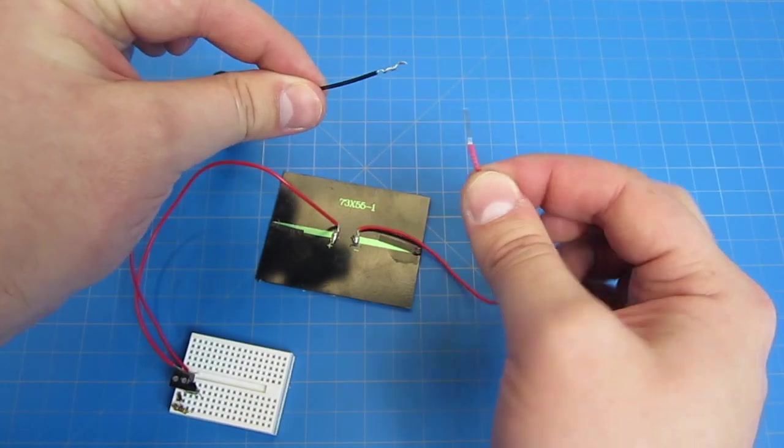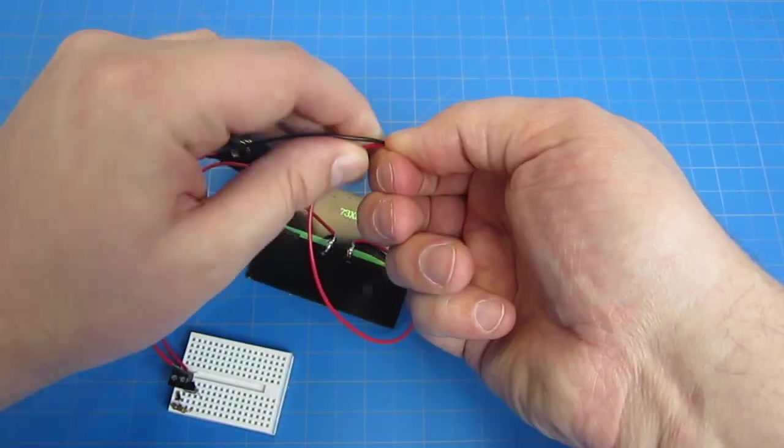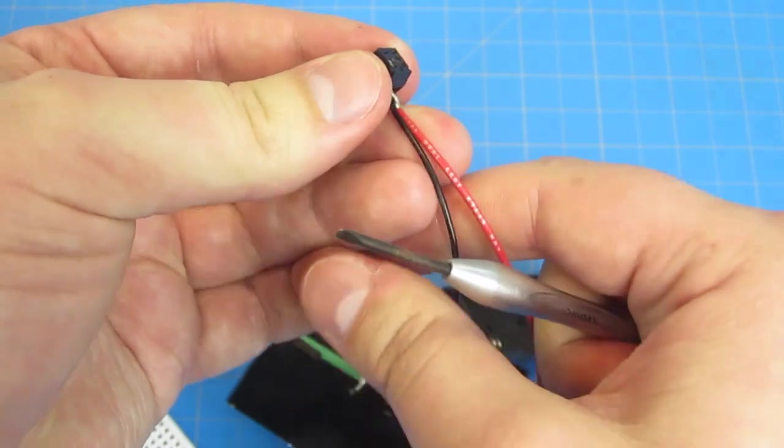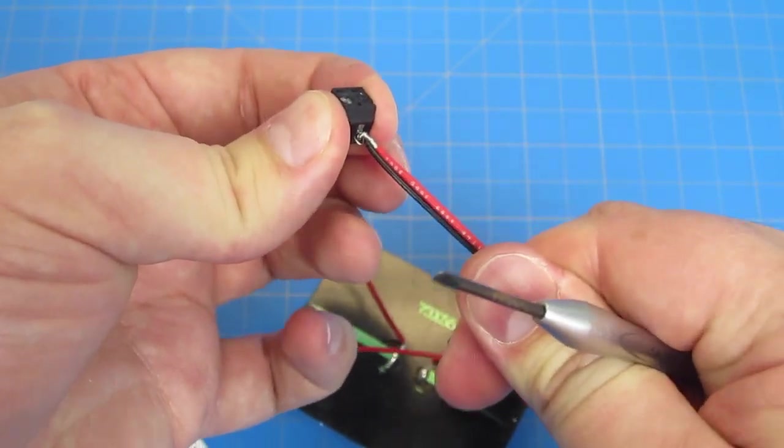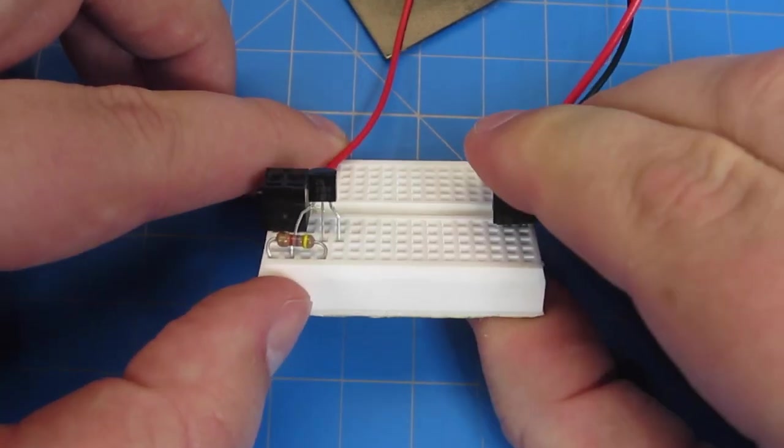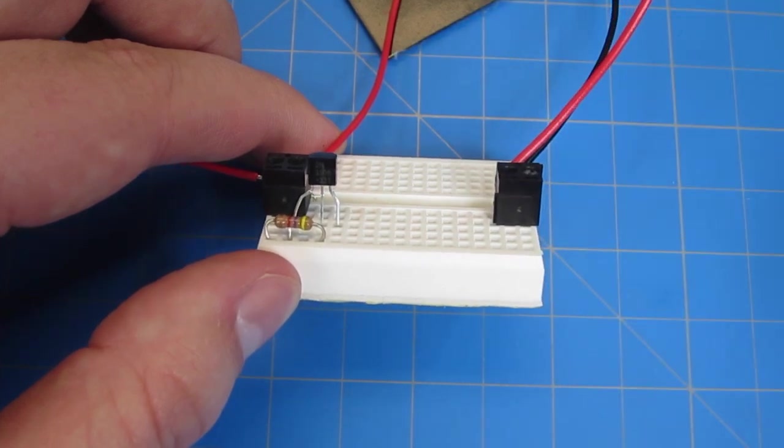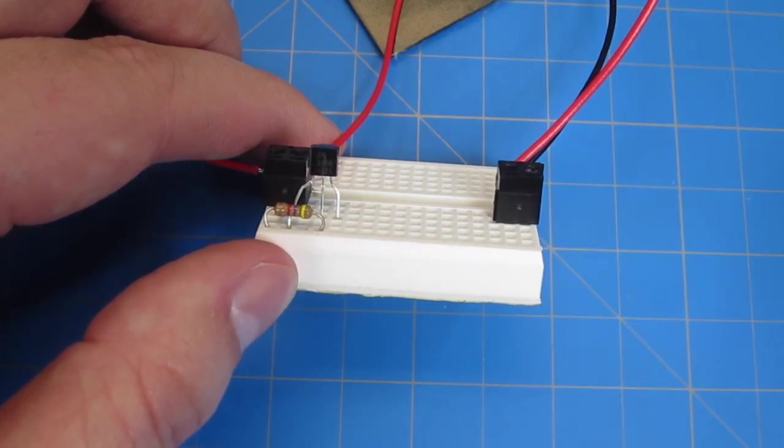Grab the negative wire from your battery holder and the negative wire from your solar cell, strip them and twist them together. Then grab your second screw terminal and put them into the right side. To keep things simple, we're going to put that screw terminal in the top right corner, so it's taking up the far top right two pins with the wires going into the left pin.